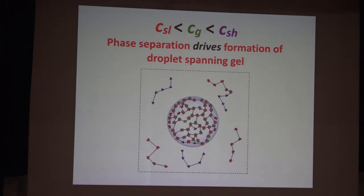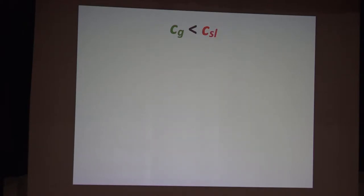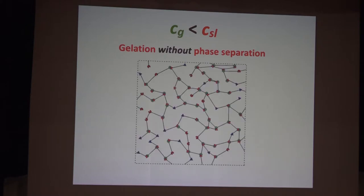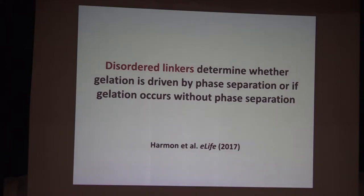The gel point threshold is crossed inside the droplet because the concentration of proteins inside the droplet is larger than the gel point, so you end up with a physically networked set of proteins inside the droplet confined to a spherical architecture. You can also have the gel point be smaller than the saturation concentration for phase separation, in which case you get gelation without phase separation. The key point is that valency alone does not tell you whether you get one or the other type of phase transition — valency simply says that you get physically cross-linked networks.